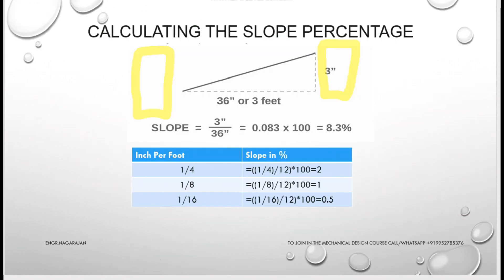Let me quickly explain what 1/4, 1/8, and 1/16 inch per foot means as a percentage. Assume a pipe falls 3 inches over a run of 36 inches (3 feet) between two manholes. The slope is 3 divided by 36 = 0.083, multiplied by 100 = 8.3%. In our case, 1/4 inch per foot means (0.25/12) × 100 = 2% slope. Similarly, 1/8 inch per foot gives 1% and 1/16 inch per foot gives 0.5% slope.